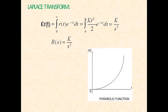Taking the Laplace transformation from zero to infinity, we get R(s) equal to k/s³ for the parabolic function. For a unit parabolic function k equals one, so R(s) equals 1/s³.